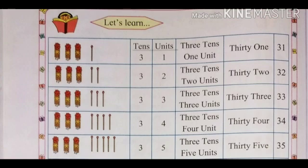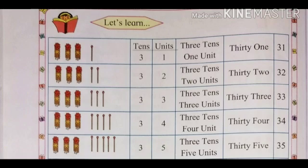Three bunches of math sticks means 30 math sticks. With 5 math sticks: 35. That is 3 tens and 5 units — 35. The spelling of 35 is T-H-I-R-T-Y (30) F-I-V-E (5): 35.